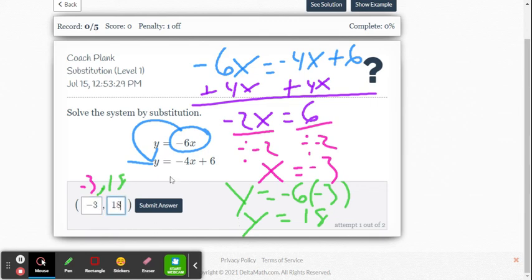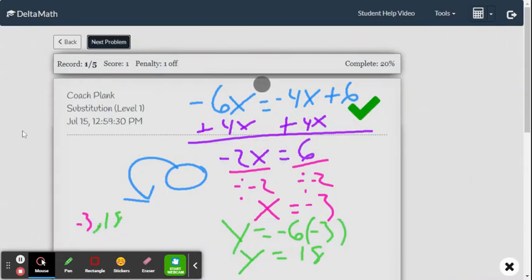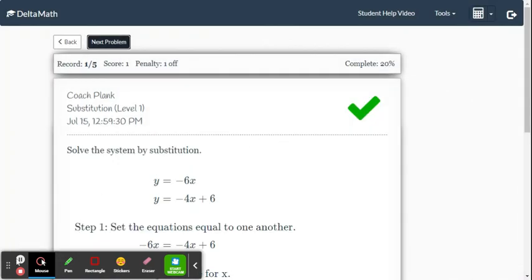And by all means, if you're not using Delta Math and you need to double check this, you have to be able to substitute negative 3 in for x and 18 in for y. It should work for both equations. It must work for both equations. We're going to use Delta Math as a cheat here, and there it is. We got it right.